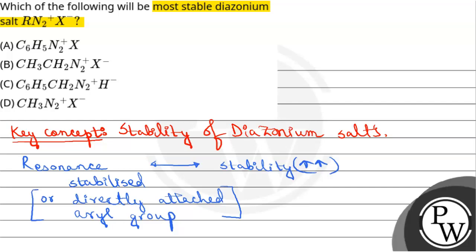Basically, it will be resonance and resonance will provide stability. First, PhN2+ X-. We will be able to make it. If there are resonating structures, it will be possible to make it. Which option is? Option number A: PhN2+ X-. It will have resonating structures.